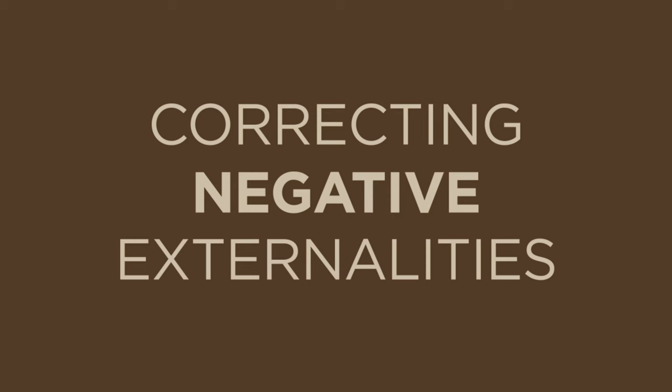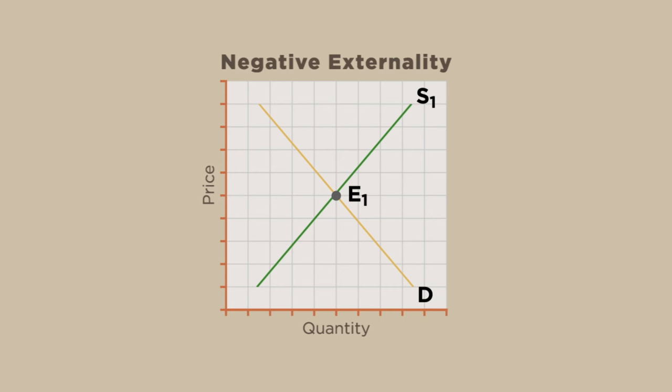Correcting Negative Externalities. Government can play a role in reducing negative externalities by taxing goods when their production generates spillover costs. This taxation effectively increases the cost of producing such goods. The higher costs better reflect the true cost of production because it includes the spillover cost of pollution. So, such taxation attempts to make the producer pay a cost that reflects the full cost of production. The use of such a tax is called internalizing the externality.